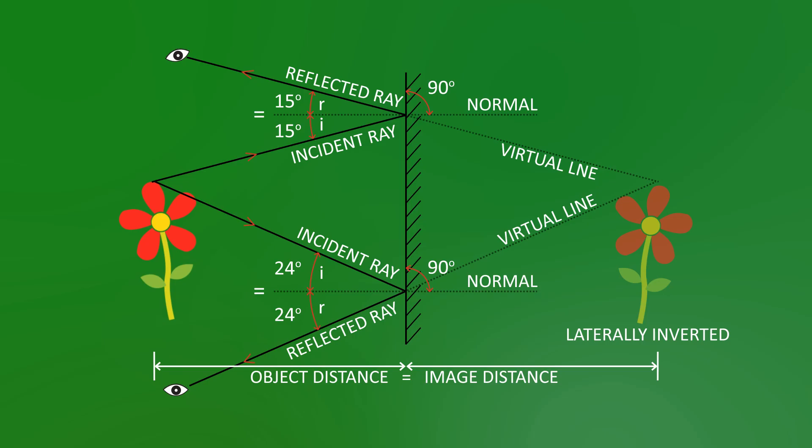So let's recap. We always draw light rays with solid lines with arrows on them. And we always draw a normal, which is a dotted line at 90 degrees to a surface where a light ray hits. We've got the law of reflection, I equals R.